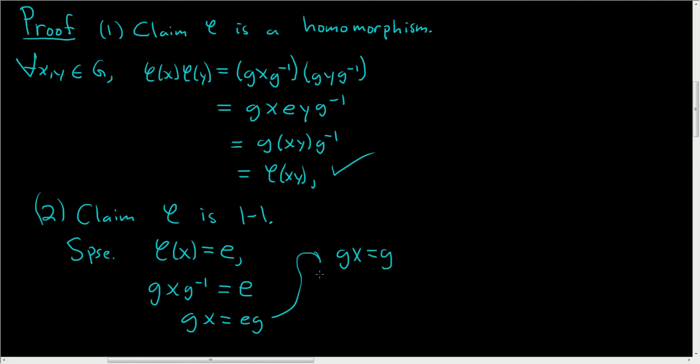And then via cancellation or simply multiplying on the left by g⁻¹, we get that x is equal to the identity. So this shows that the kernel of φ is equal to the identity element, and so φ is 1 to 1. So that part checks as well.